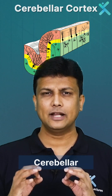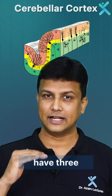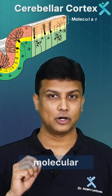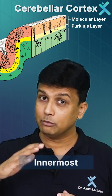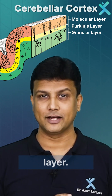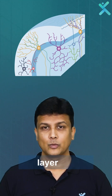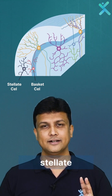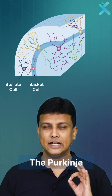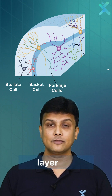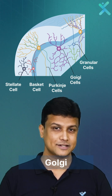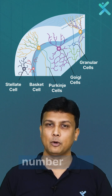Let us discuss all the points regarding the cerebellar cortex. The cerebellar cortex has three layers: the outermost is the molecular layer, the middle is the Purkinje layer, and the innermost is the granular layer. The molecular layer contains stellate cells and basket cells, the Purkinje layer contains Purkinje cells, and the granular layer contains granular cells as well as Golgi cells.